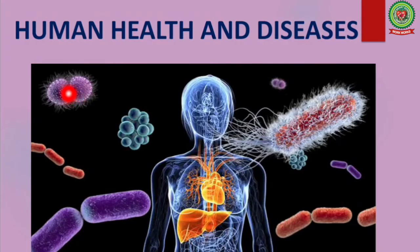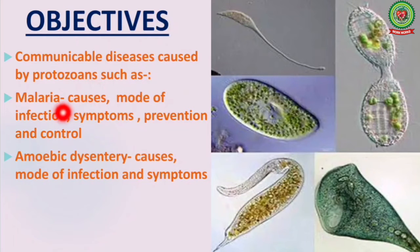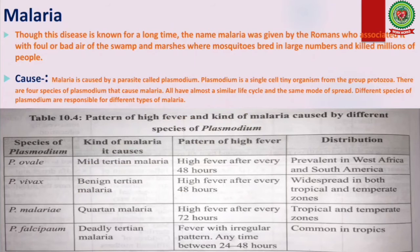Hello children, this video is in continuity with the previous video of the chapter Human Health and Diseases. The various objectives we are going to cover in this video are communicable diseases caused by protozoans such as malaria — its causes, mode of infection, symptoms, prevention and control — including the life cycle of Plasmodium, amoebic dysentery, its causes, mode of infection, and symptoms.